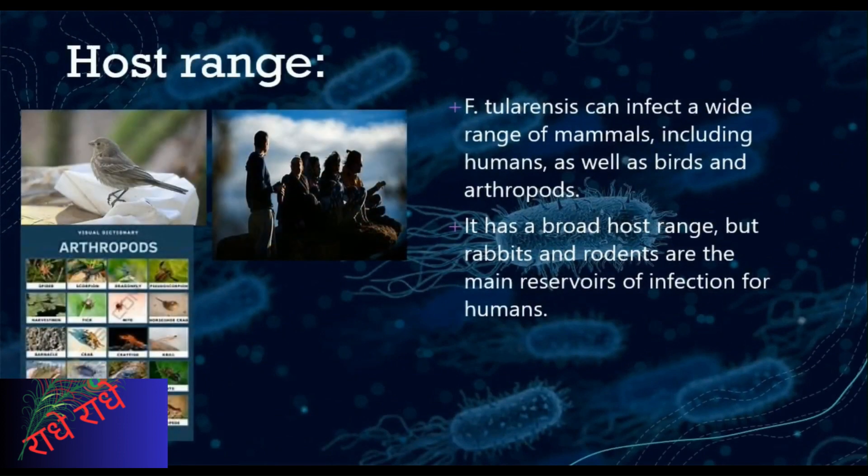F. tularensis is an important pathogen which can infect several mammals, birds, and arthropods, but mainly rabbits and rodents are reservoirs of infection for human beings. It is imperative to create effective drugs to protect against and treat F. tularensis infection.